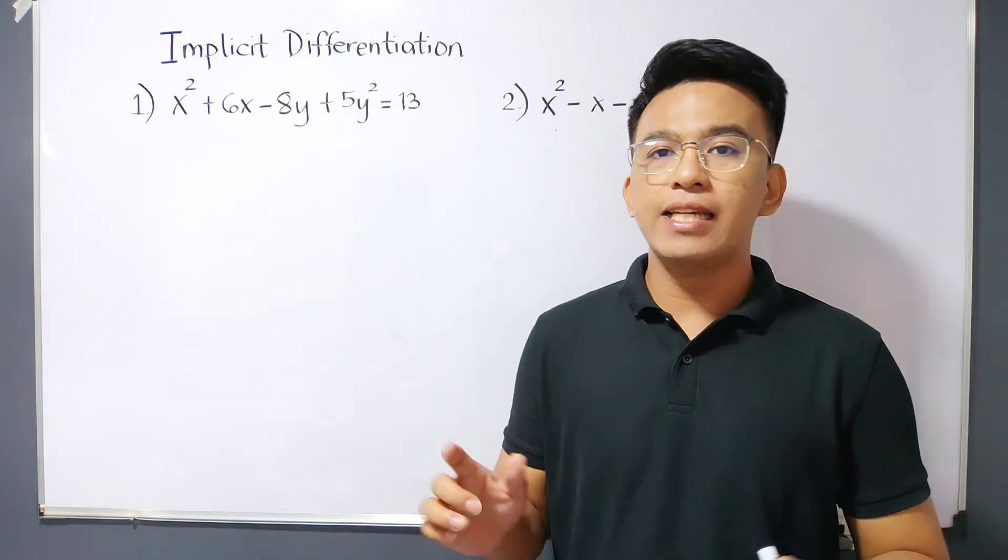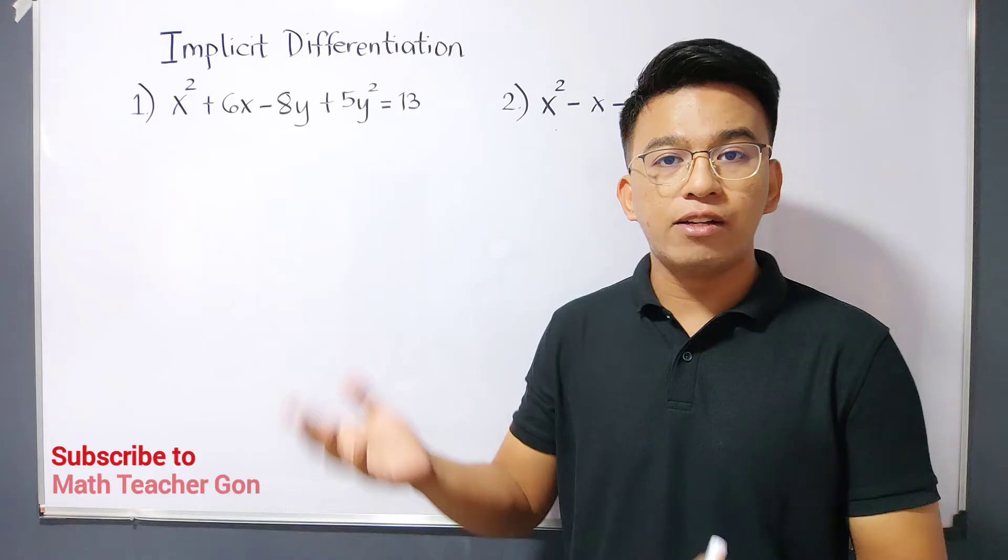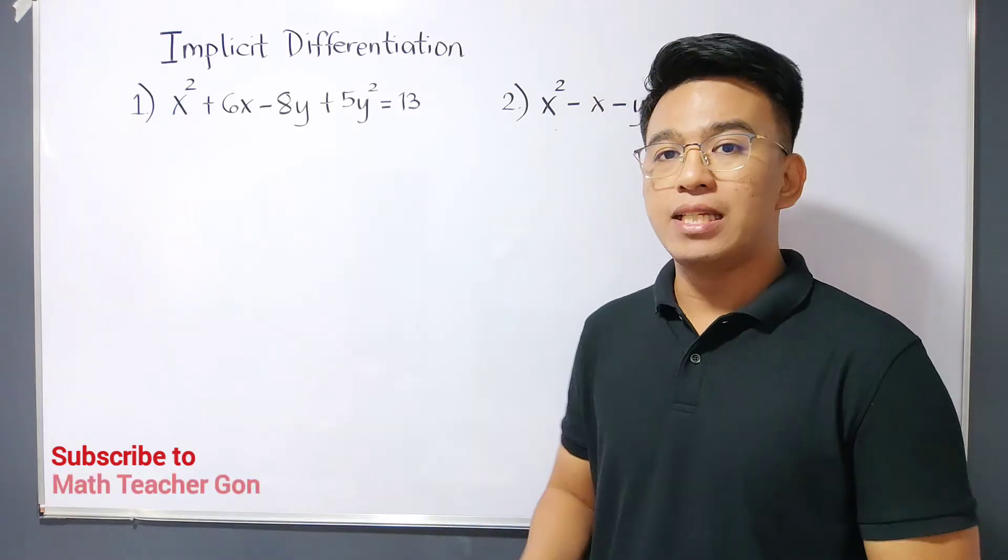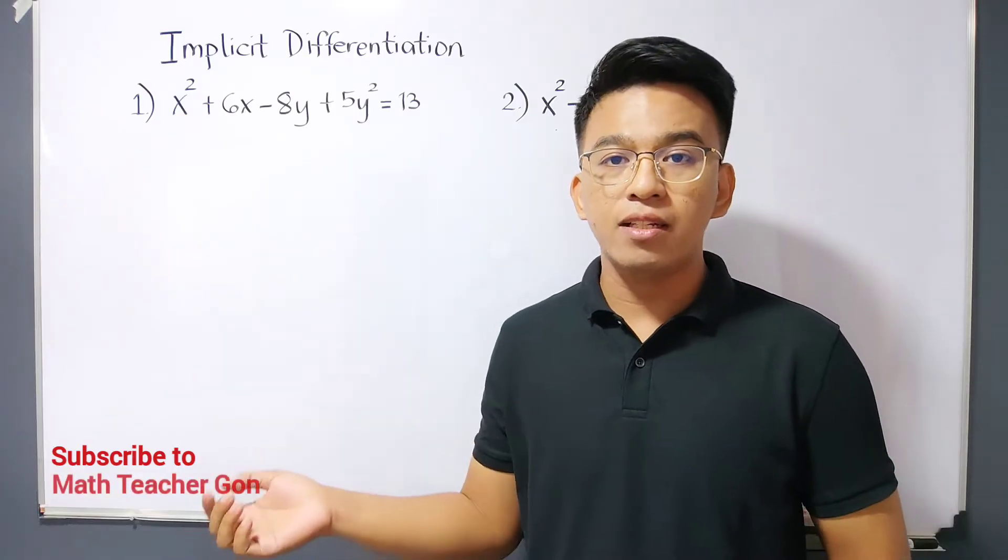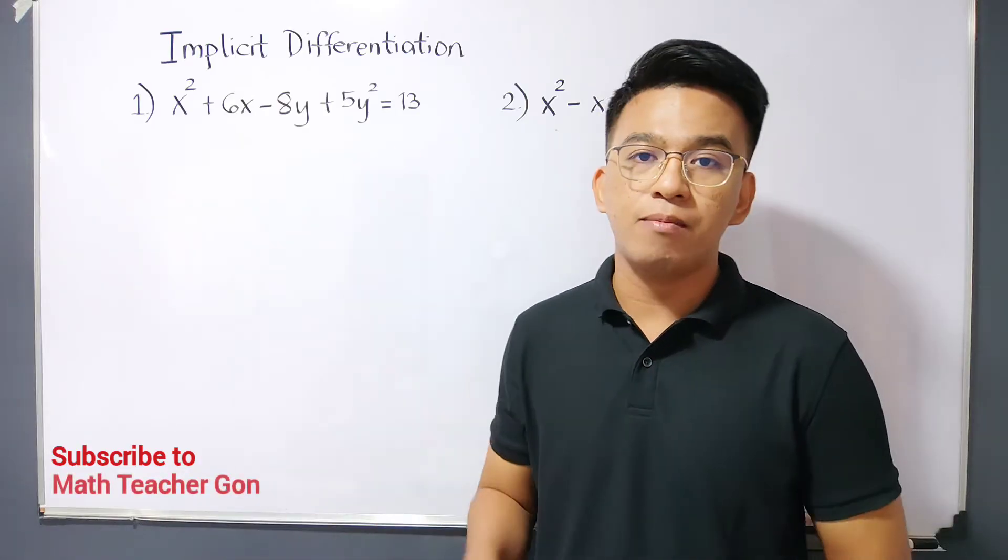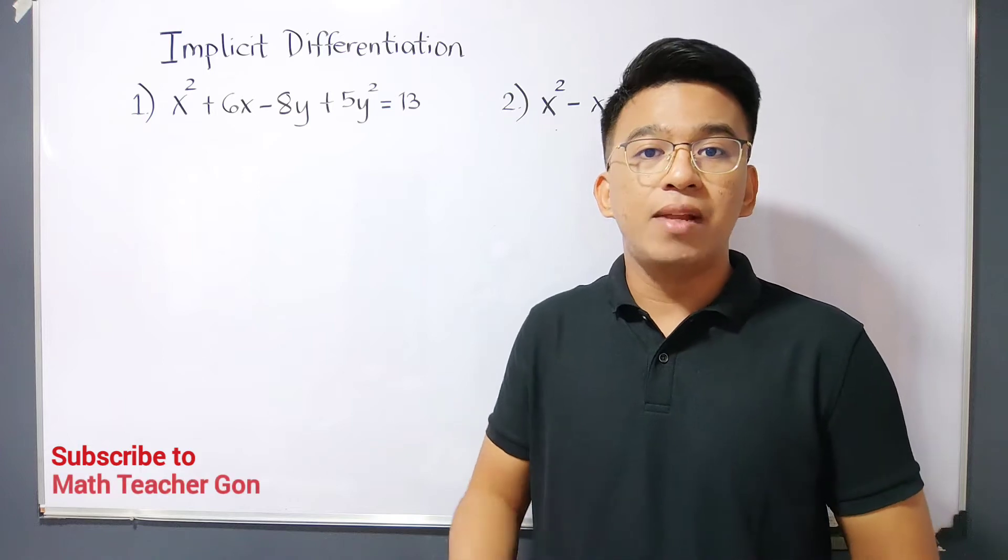As you can see, we have here two examples, and later on, I will discuss two more examples about implicit differentiation. You'll notice that instead of having the x variable only, we also have the y variable, and our target is to derive them implicitly.